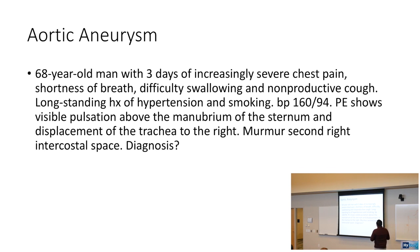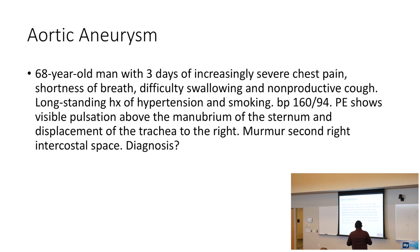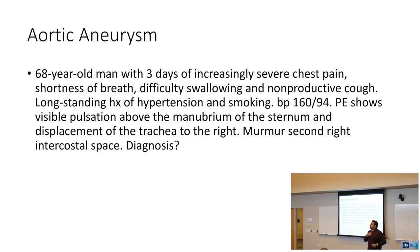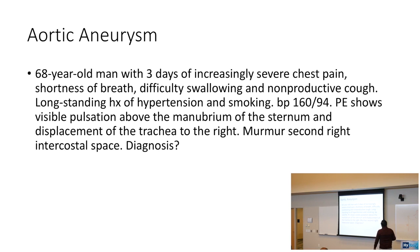A 68-year-old male with three days of increased severe chest pain, shortness of breath, difficulty swallowing, and non-productive cough. Longstanding history of hypertension and smoking. Blood pressure is elevated. Physical exam shows visible pulsation above the manubrium of the sternum and displacement of the trachea to the right. Anytime you have displacement of these anatomic structures, think about something getting really big and pushing on the normal structures in that area. You hear a murmur at the second right intercostal space. The diagnosis here is aortic aneurysm.